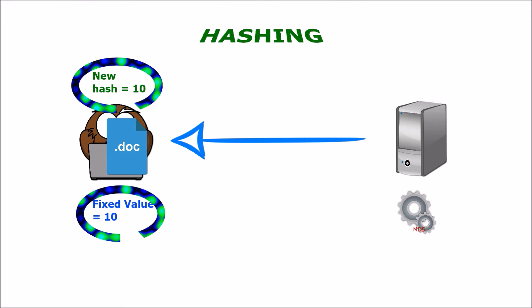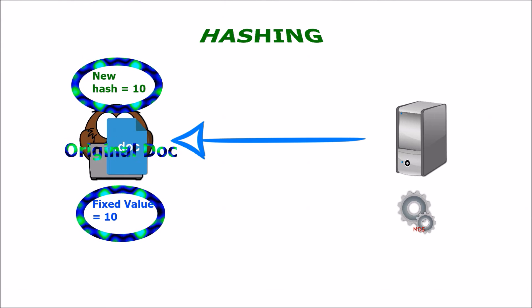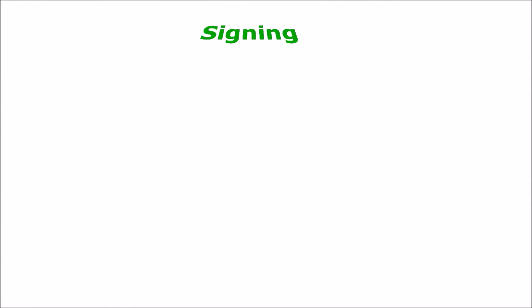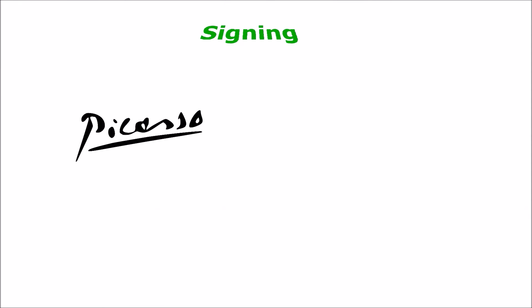With the use of hashing, proof of the integrity of the document can now be verified. The second method deals with the signing of the data, also referred to as a digital signature. To successfully implement this method on a network requires having a public key infrastructure, also known as a PKI.